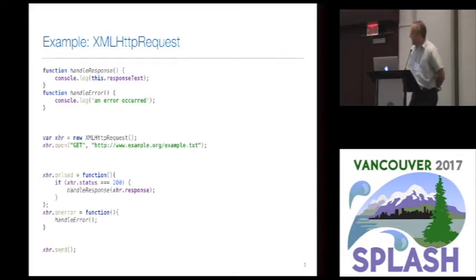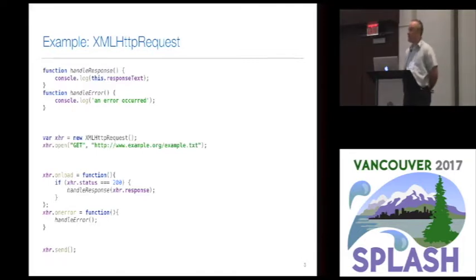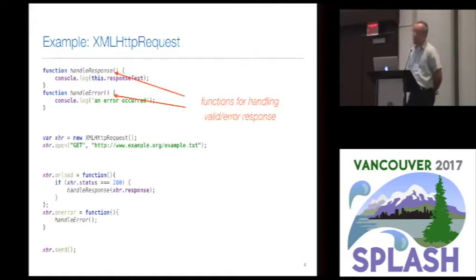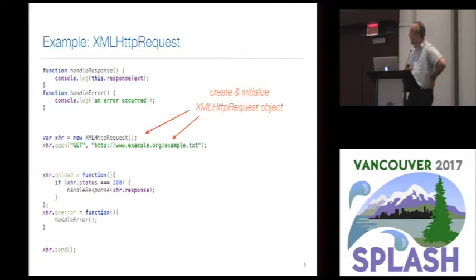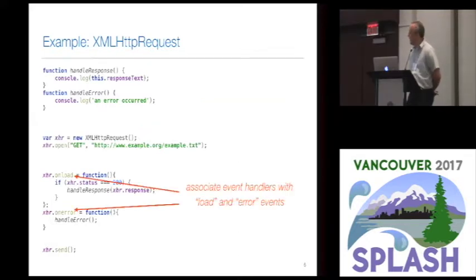So this is a running example that I'll be using in the remainder of this talk. It's a small example involving an XML HTTP request written in JavaScript using traditional event-driven programming. Let's quickly look at what this code looks like. At the top, we have two functions that are invoked when either a correct response is received for an HTTP request or if an error has occurred. In the middle, there's some code for creating and initializing an HTTP request object.